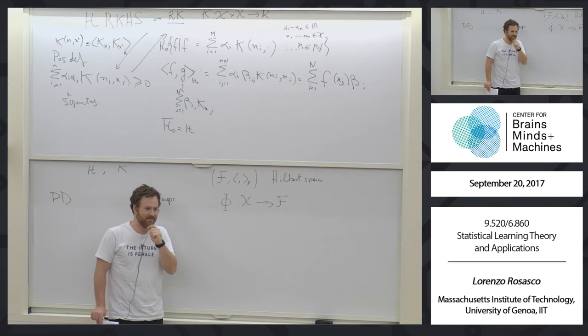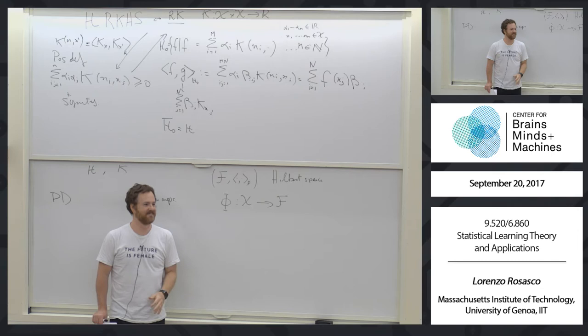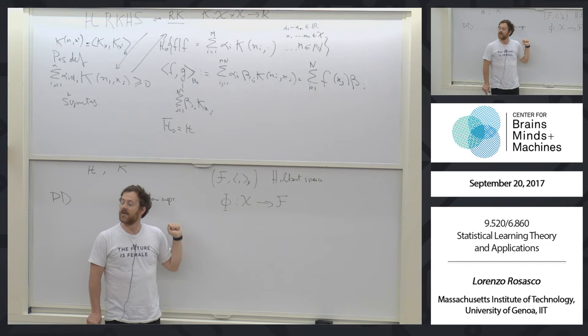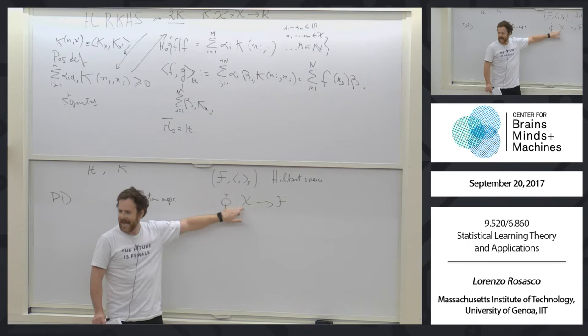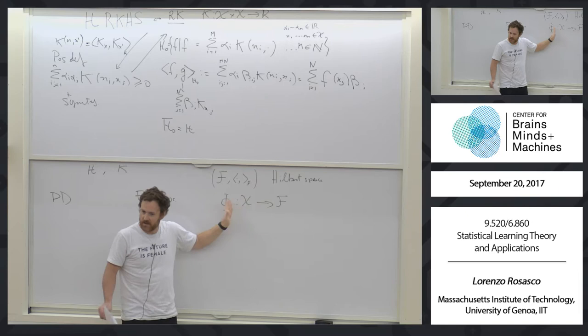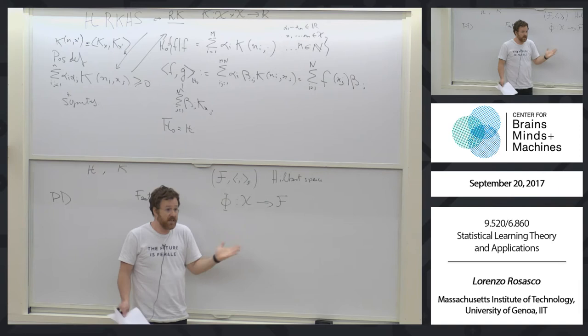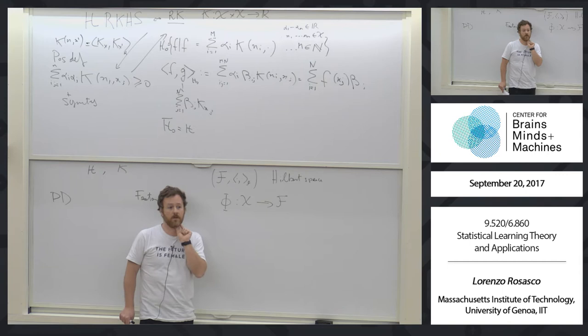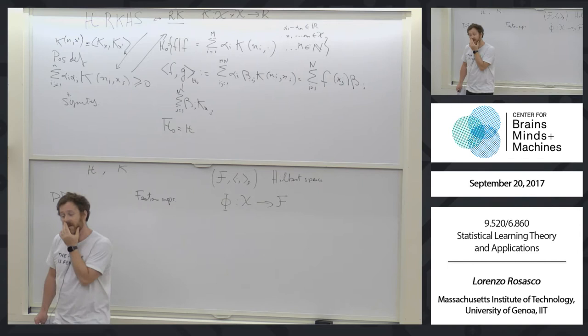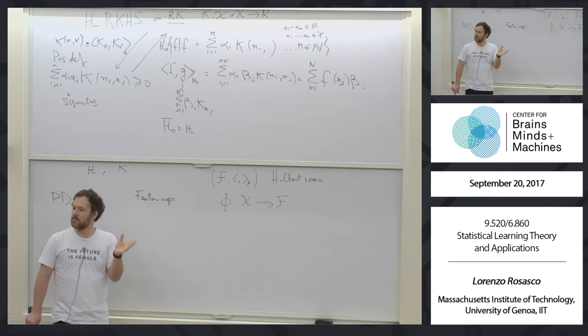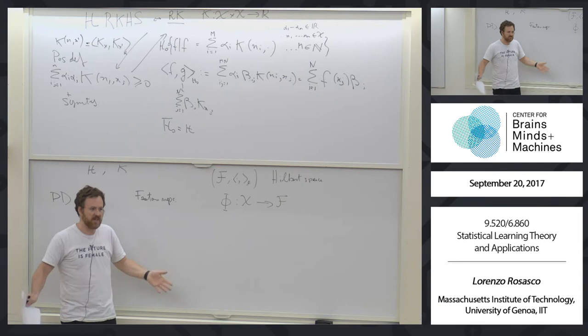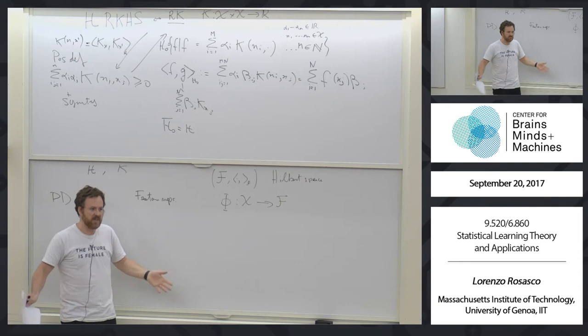That's what we call a feature space and a feature map: a map that sends data into another space that has structure — it's a linear space with an inner product, potentially infinite dimensional. The simplest example is the identity: take X equal to R^d, F equal to R^d, and phi equal to the identity — just send x into itself, doing nothing. That's the laziest thing you can do.